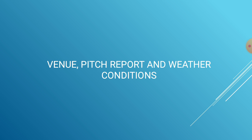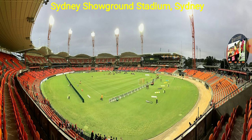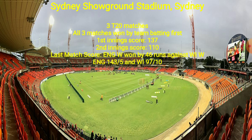This match will take place at Sydney Showground Stadium. Three T20 matches have been played here so far and all have been won by the team batting first. The average first innings score is 137 and the second innings average is 110. The last match here was between England Women and West Indies Women, which England won by 46 runs. It's a decent batting wicket if you bat first, but spinners have played a big role and the same can be expected again, as batting in the second innings becomes difficult when the ball comes on slow in the latter half. So it's basically a win-the-toss-and-bat-first wicket.